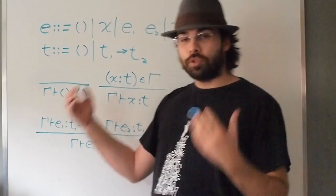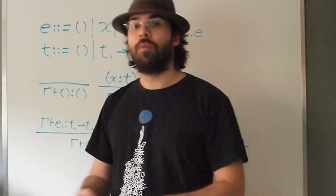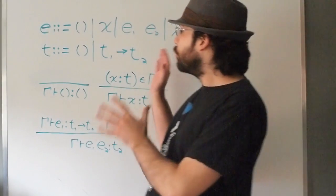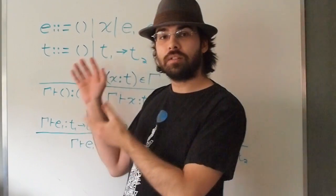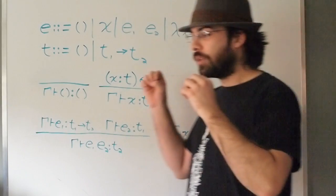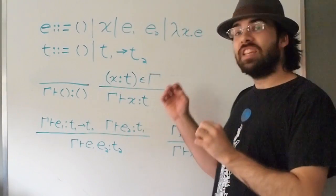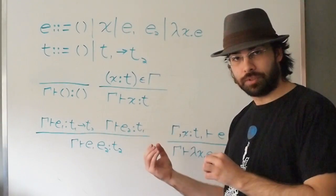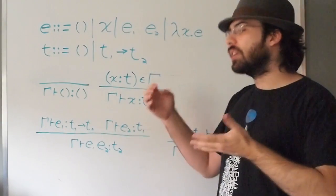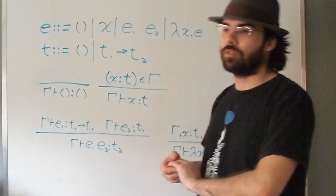I want to review how the typing rules for the lambda calculus are typically given because I want to point out that the typing rules give both the scoping rules and the typing rules, and this will give us insight into why we want a strongly typed version of bound.